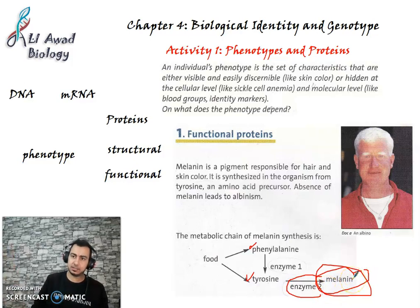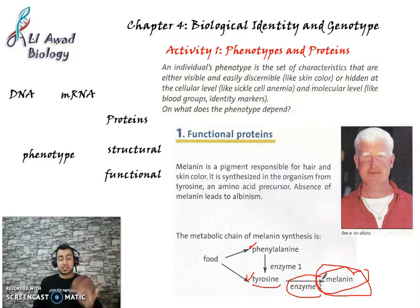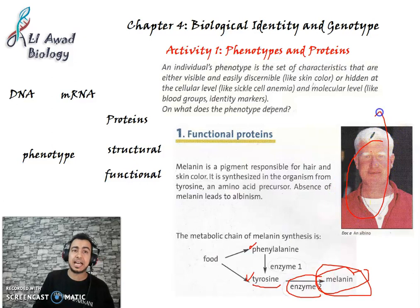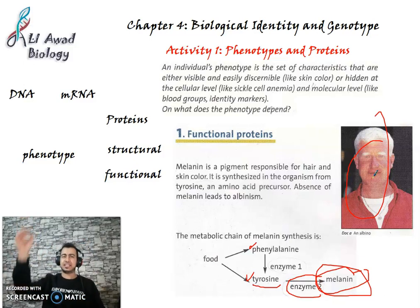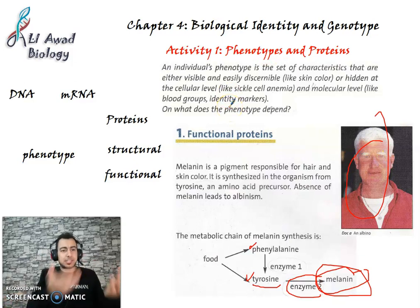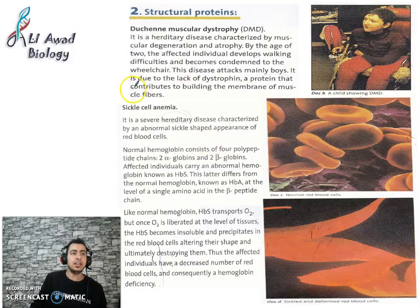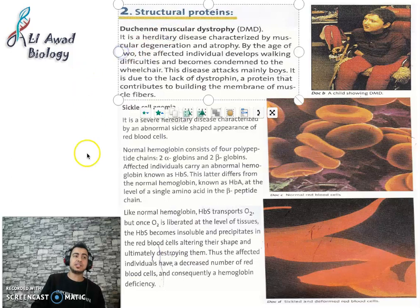This leads to a disease called albinism. The albino individual has no skin color, white hair, and very blue to red eyes because they don't have melanin to protect them from sunlight — so they must wear sunglasses. This is an abnormal phenotype due to an abnormal protein.